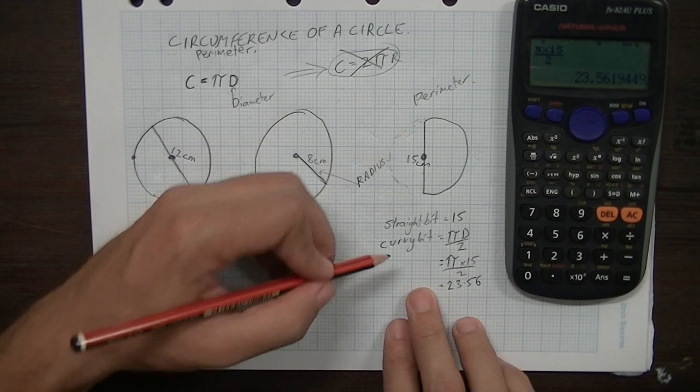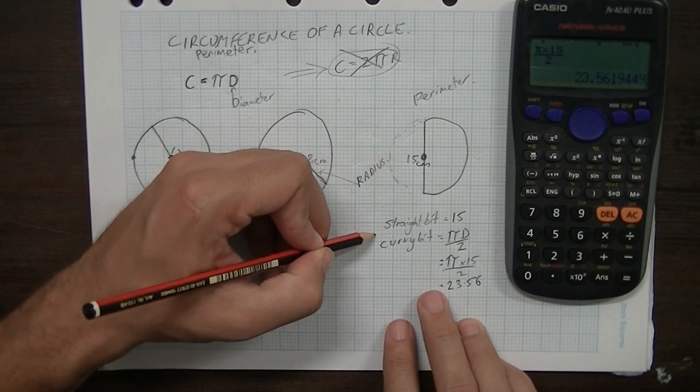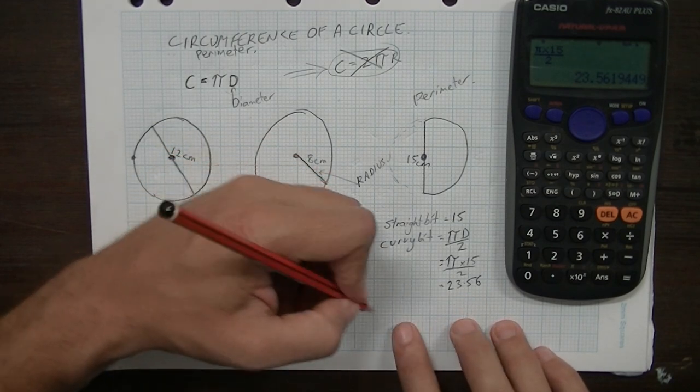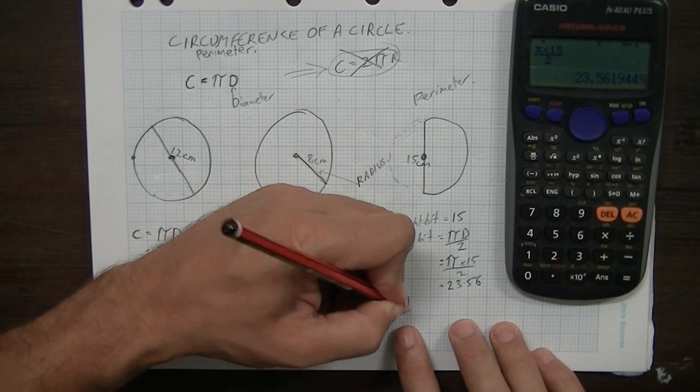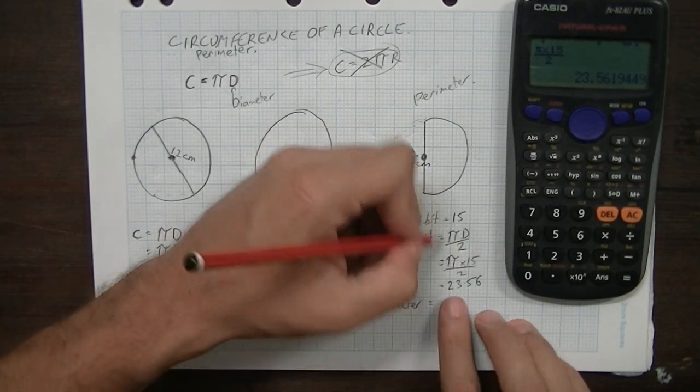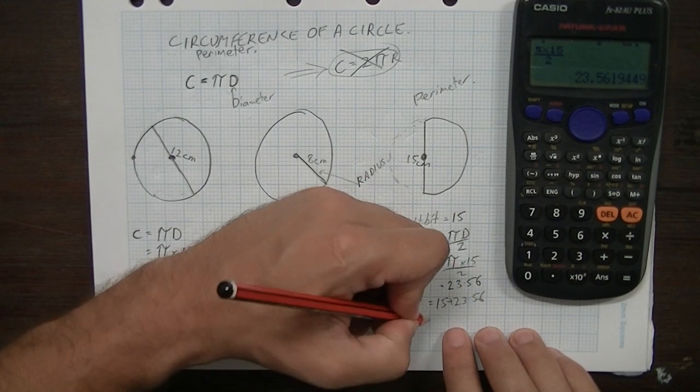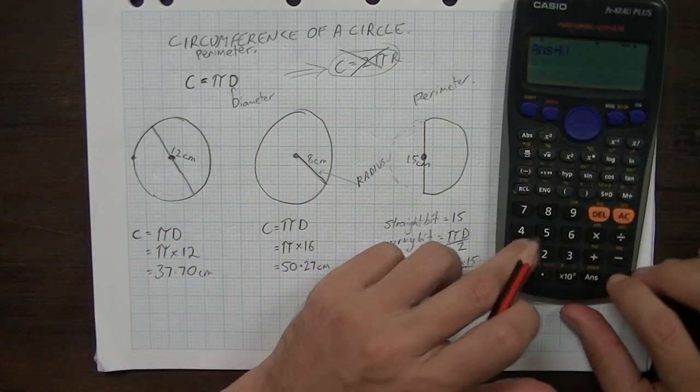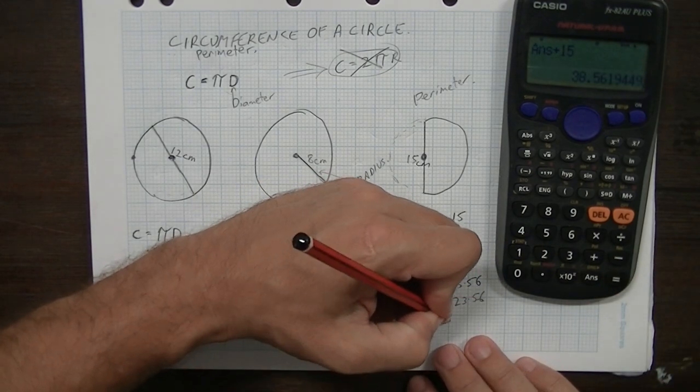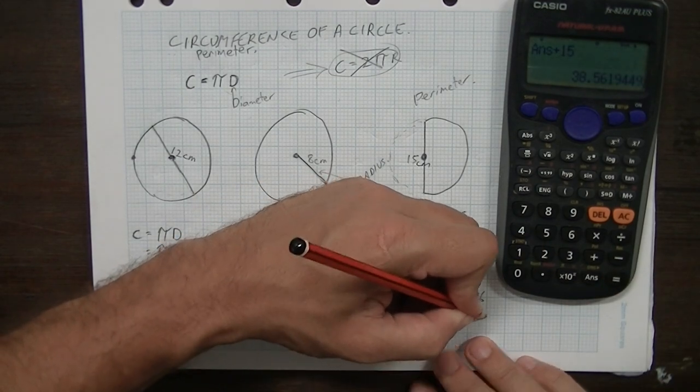Now, finally, we know the straight bit's 15. We know the curvy bit is 23.56. So the total perimeter of this shape is going to be equal to 15 plus 23.56, which is 38.56 centimetres.